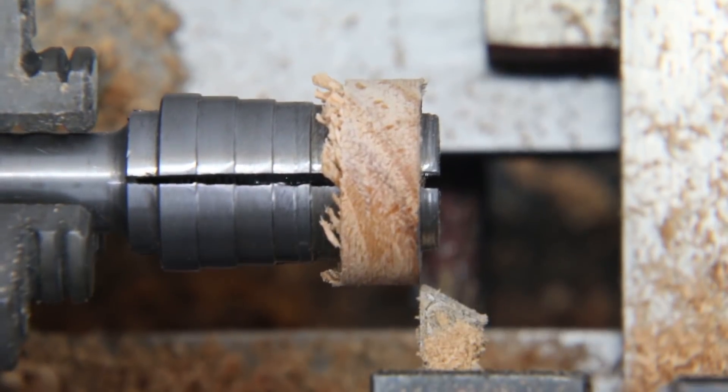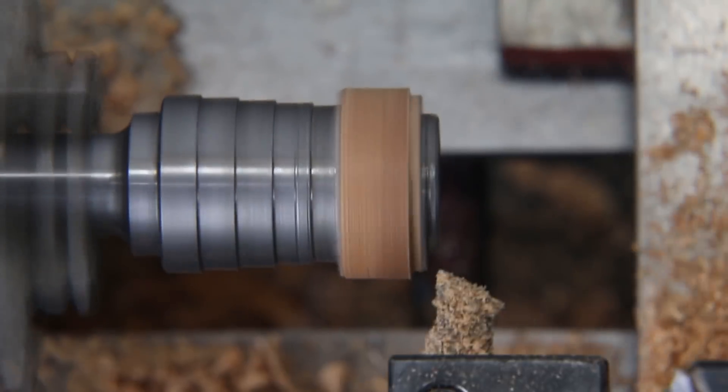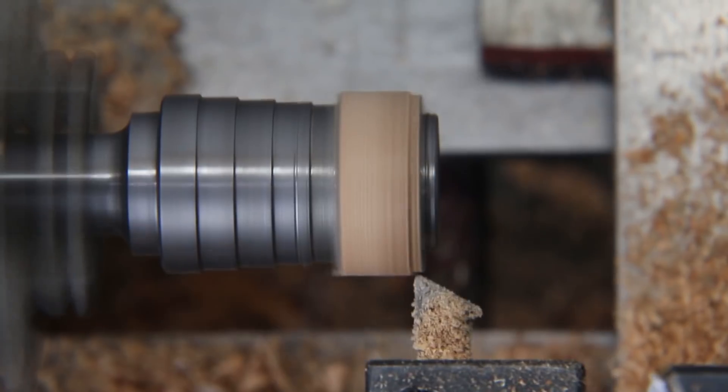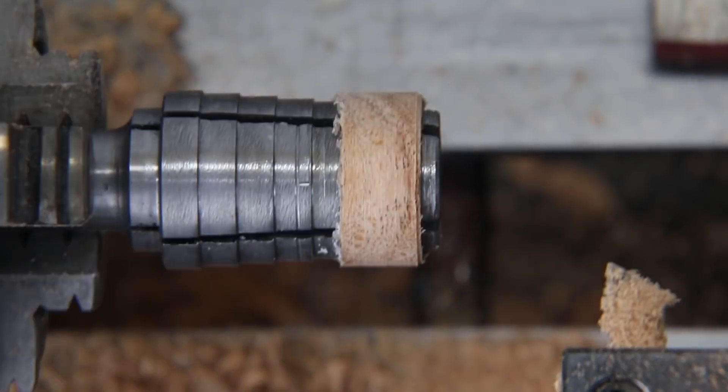Once I start zeroing in on that final outside diameter I want on this, I need to be very careful because even removing the slightest amount can cause it to go from the carbon fiber not even fitting over the ring to it being too loose.